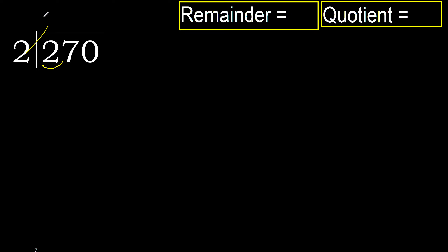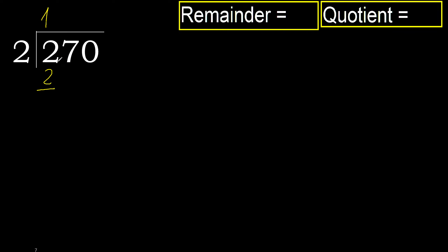2 multiplied by 2 is 4 — 4 is greater. Multiplied by 1 is 2, is not greater. Ok, 2 minus 2 is 0. Next.